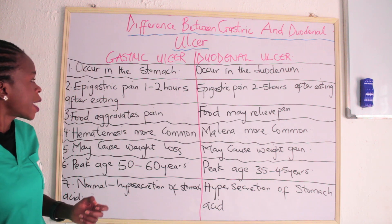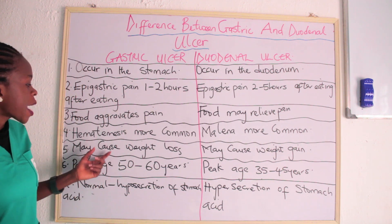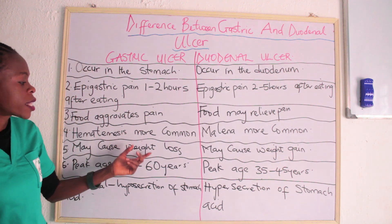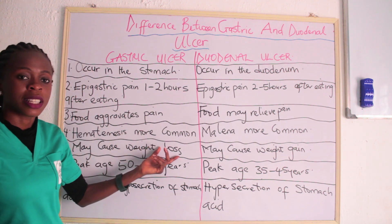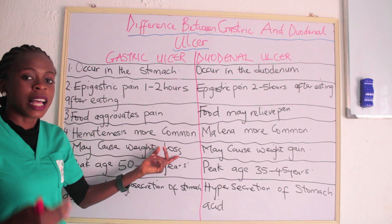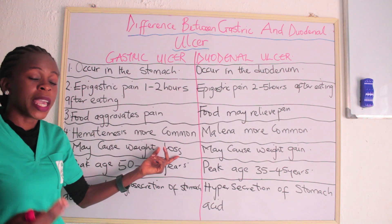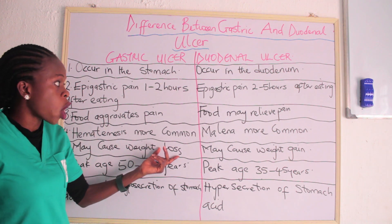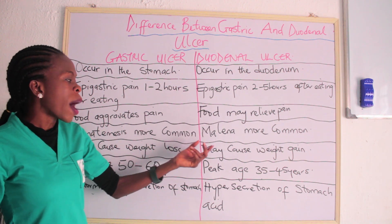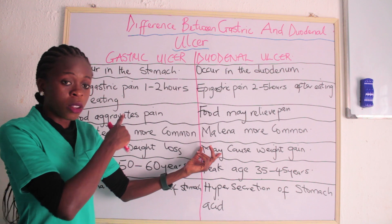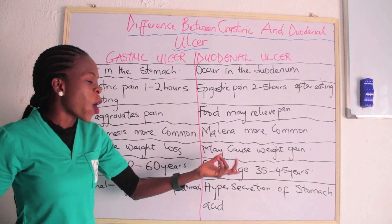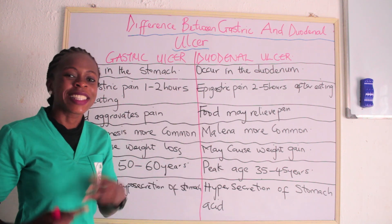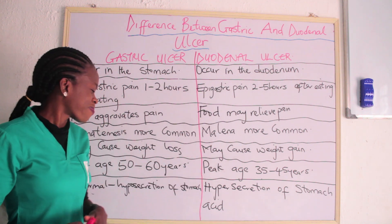Another difference relates to body weight. Gastric ulcer may cause weight loss, while duodenal ulcer may cause weight gain.